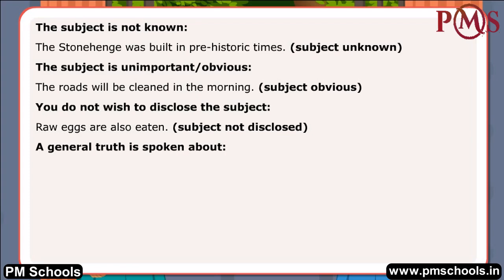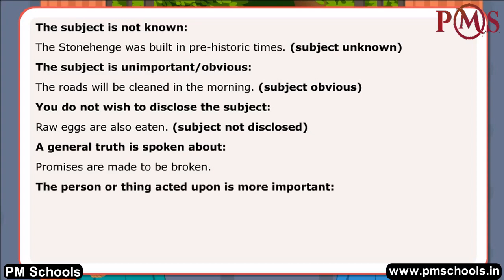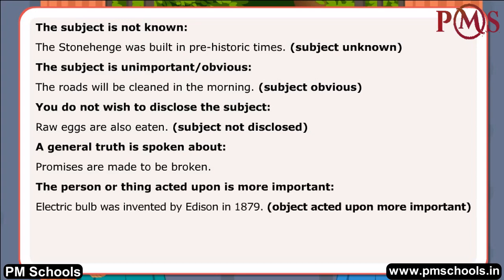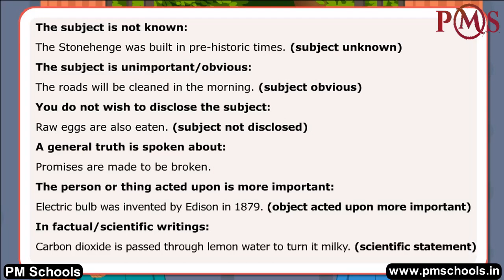A general truth is spoken about: 'Promises are made to be broken.' The person or thing acted upon is more important: 'Electric bulb was invented by Edison in 1879' — object acted upon is more important. In factual or scientific writings: 'Carbon dioxide is passed through lemon water to turn it milky' — scientific statement.